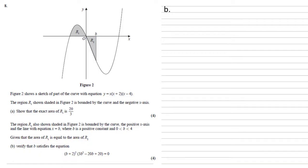The region R2, also shown shaded in figure 2, is bounded by the curve, the positive x axis, and the line of equation x equals b, where b is a positive constant which lies between 0 and 4. Given that the area of R1 is equal to the area of R2, verify that b satisfies the equation b plus 2 all squared times 3b squared minus 20b plus 20 equal to 0.